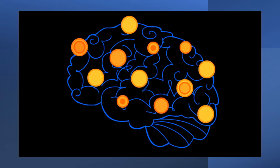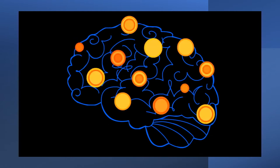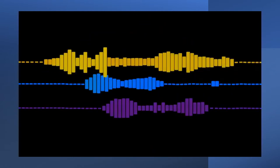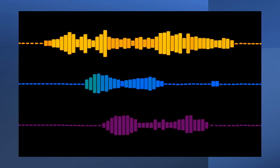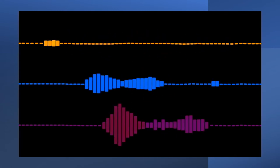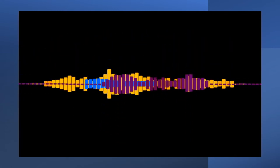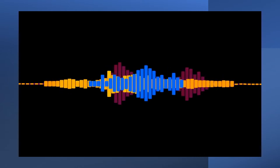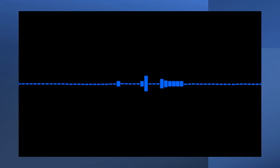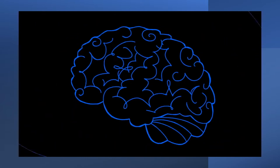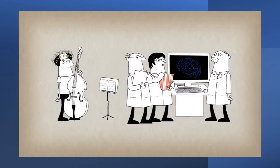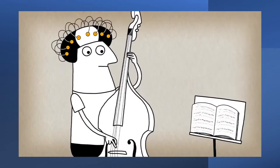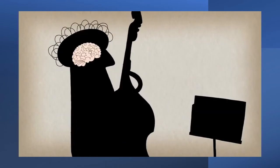Multiple areas of their brains were lighting up at once as they processed the sound, took it apart to understand elements like melody and rhythm, and then put it all back together into a unified musical experience. And our brains do all this work in the split second between when we first hear the music and when our foot starts to tap along. But when scientists turned from observing the brains of music listeners to those of musicians, the little backyard fireworks became a jubilee.